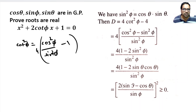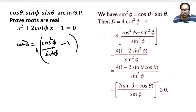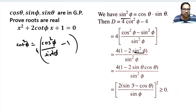If we simplify this, that means (cos²φ - sin²φ) / sin²φ. We can write cos²φ as 1 - sin²φ, so this becomes (1 - sin²φ - sin²φ) / sin²φ, which is (1 - 2sin²φ) / sin²φ. Now, sin²φ is actually equal to cos θ · sin θ, because these three are in geometric progression.